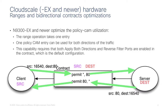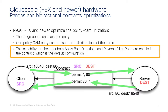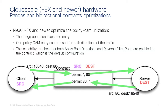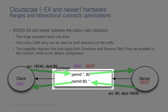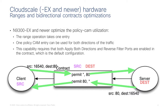Let's take a look at the first optimization. It was introduced on EX leaves and the logic is very simple. Imagine you have a classic contract to allow traffic from outside to a web server. You would configure a contract with the filter and the subject defined for bidirectional, meaning apply both direction and reverse filter ports, which is the default. If you don't enable compression, the policy cam would have two entries.